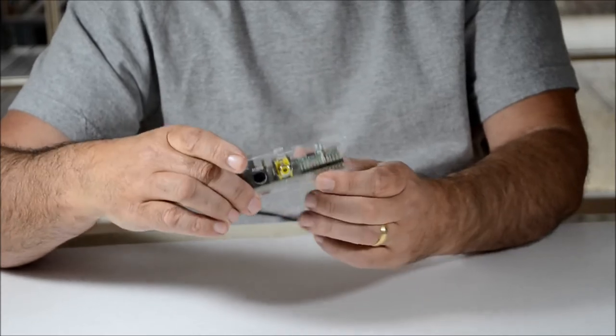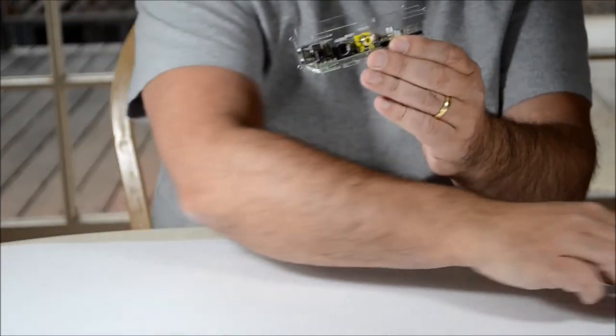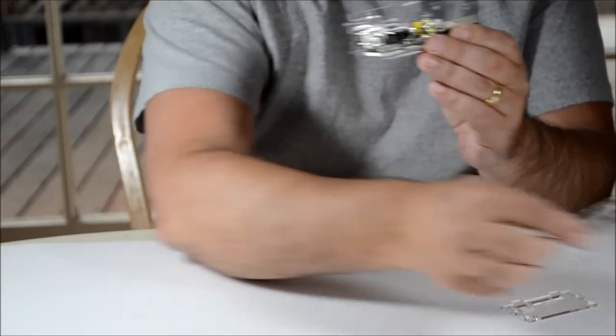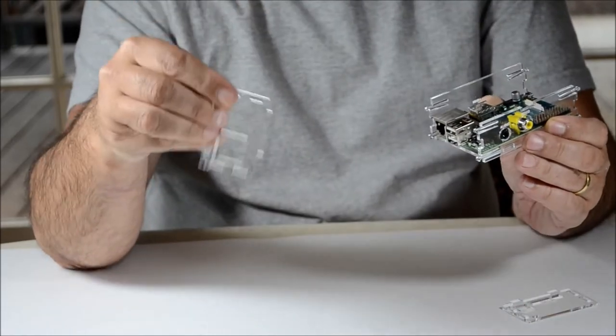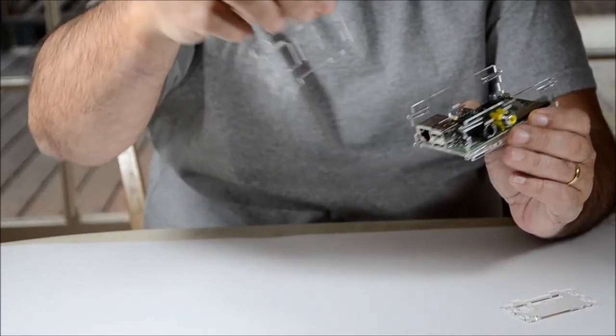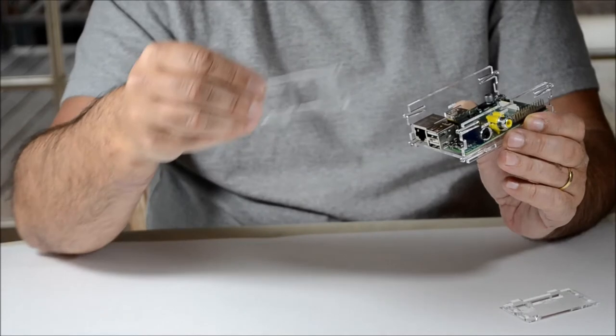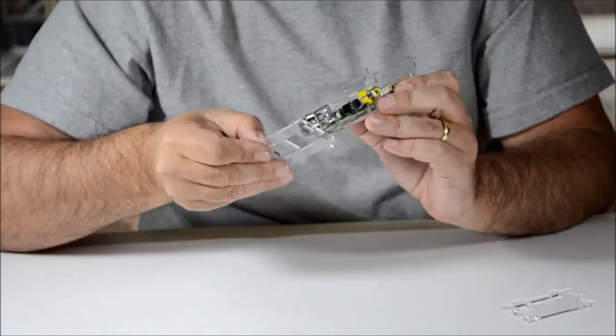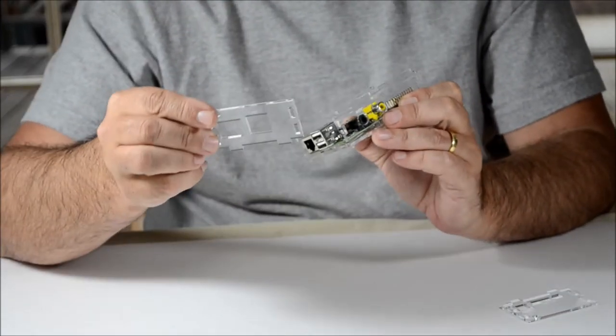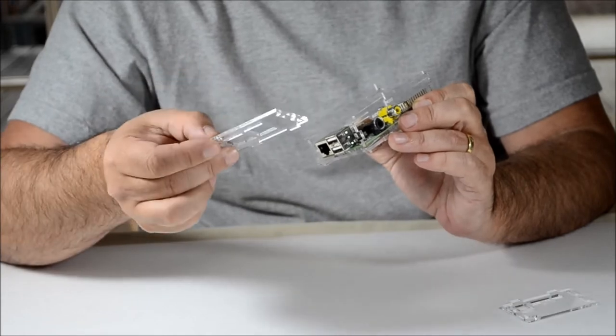And then what I'm going to do is take this piece with the USB. You want to make sure the labels are on the outside when you do this. If not, then you can always remove the piece later.